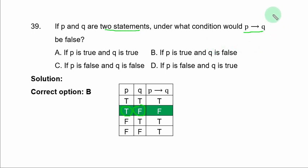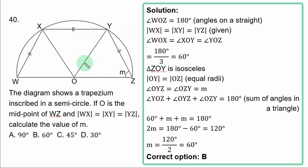Question 40, the diagram shows a trapezium inscribed in a semicircle. If O is the midpoint of WZ and WX = XY = YZ, calculate the value of m. Now, angle WOZ is equal to 180°, angles on a straight line.